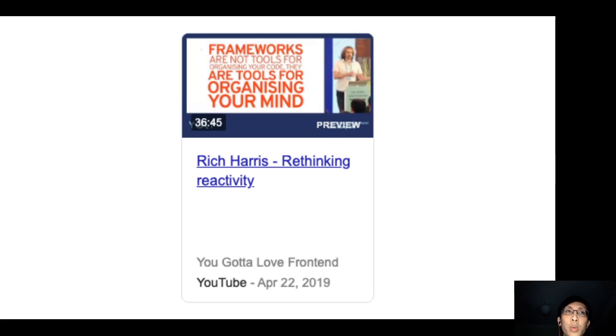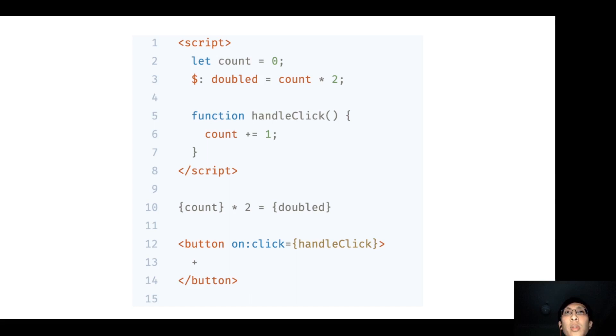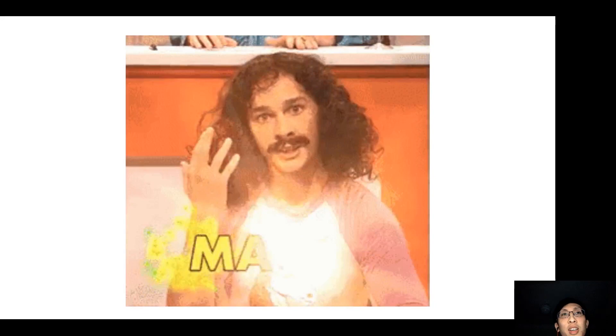Svelte 3 moves the reactivity into the language. Being able to declare and update a reactive variable, just like how you would do for a normal JavaScript variable, is magic. And the secret behind the magic is that Svelte is a compiler.